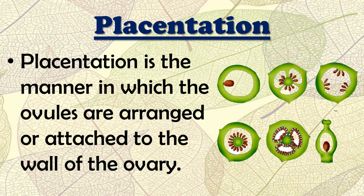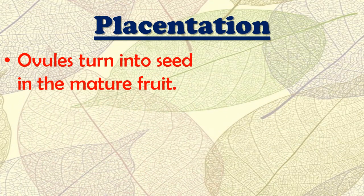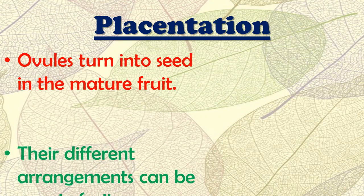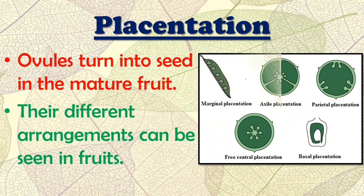The ovules turn into seeds in the mature fruit — that is, after maturation, the ovules convert into seeds within the fruit. Different arrangements of placentation can be seen in different fruits such as pea, tomato, mango, and lotus.